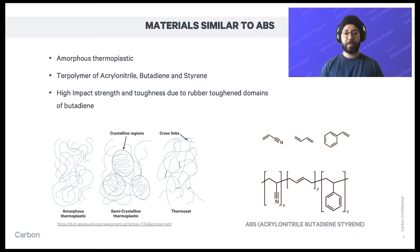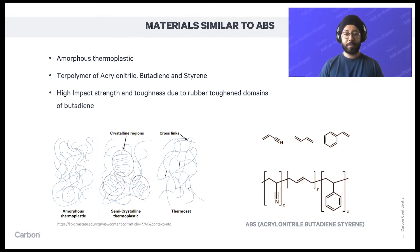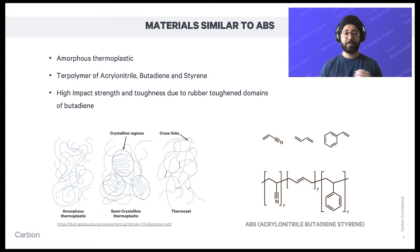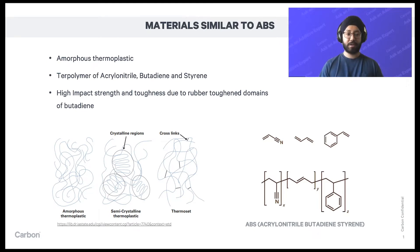The main thing is the butadiene, which is the central part of ABS, giving it its high performance and high impact strength properties. In ABS, you have this bulky, rigid polystyrene around it, and then this soft and gooey butadiene between, which acts as a cushion. We call these rubber toughened domains of butadiene, which gives ABS its amazing set of high impact strength properties.